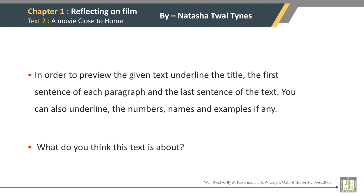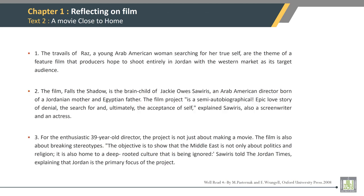What do you think this text is about? The first sentence of paragraph 1: The Travails of Roz, a young Arab-American woman searching for her true self, are the theme of a feature film that producers hope to shoot entirely in Jordan with the Western market as its target audience.